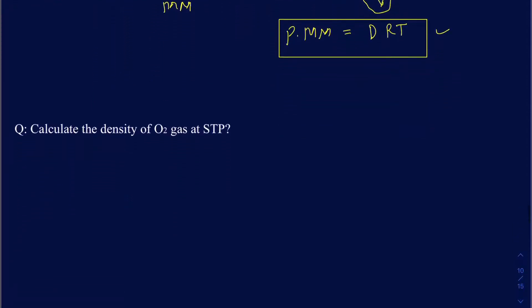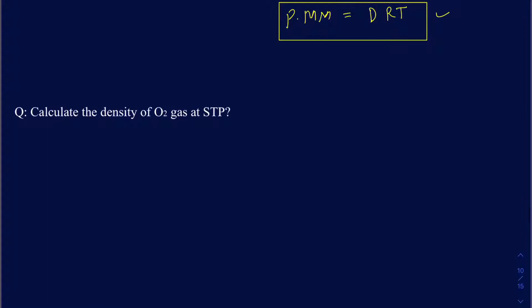Let's try to look at this question where it says calculate the density of O2 gas at STP. Now, if I'm trying to find the density, obviously I'm looking at this equation to be used, which is P MM equals DRT.